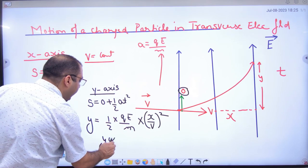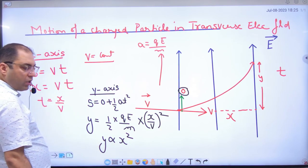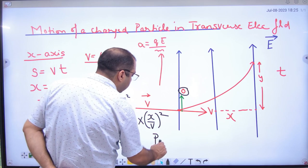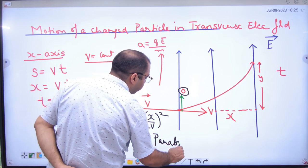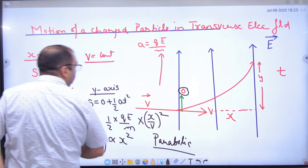So we know that y is proportional to x squared. And if y is proportional to x squared, then the path followed is parabolic in nature. This is the mathematical proof.